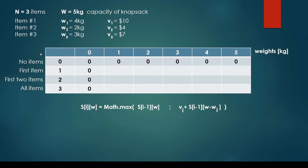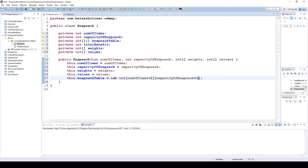Why plus one? As we discussed, we have a zero column for the weights and a zero row for the items. So with three items there are four rows, and with five kilograms capacity we have six columns. That's why we instantiate it this way.